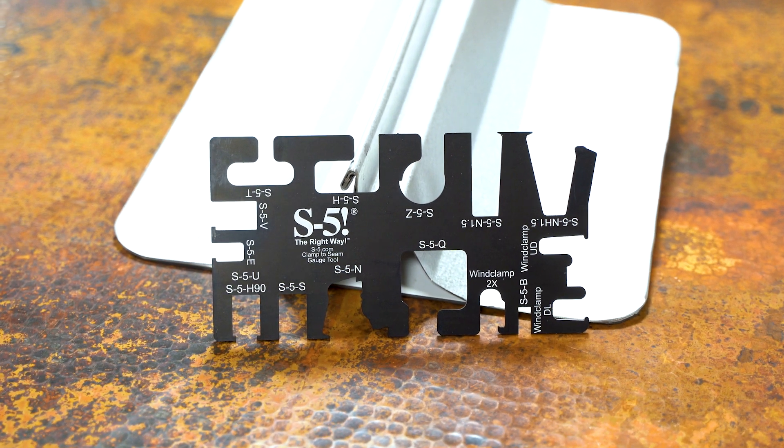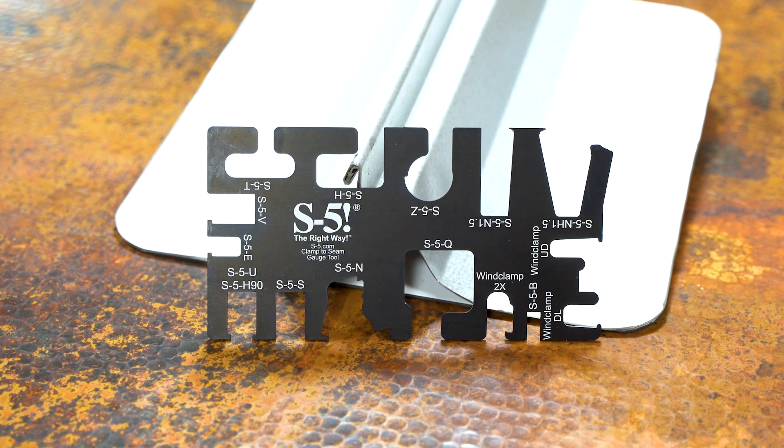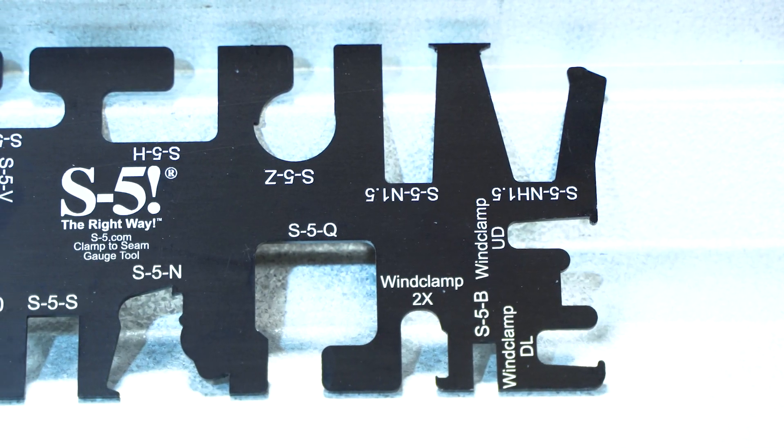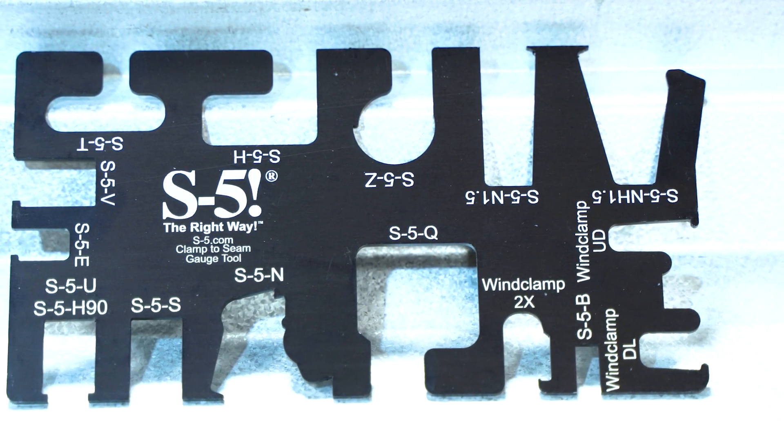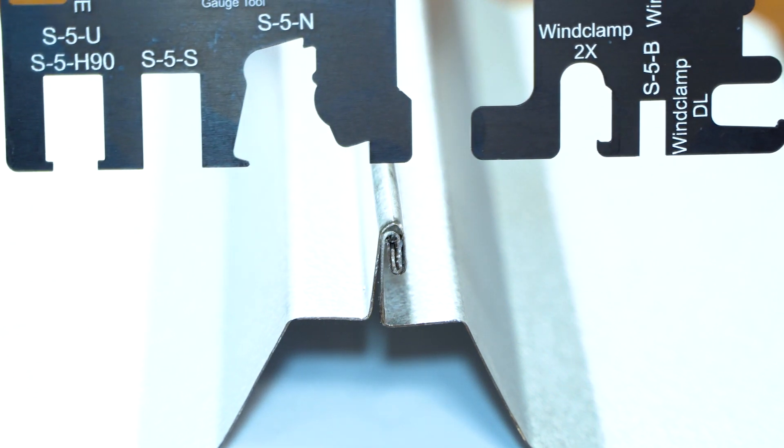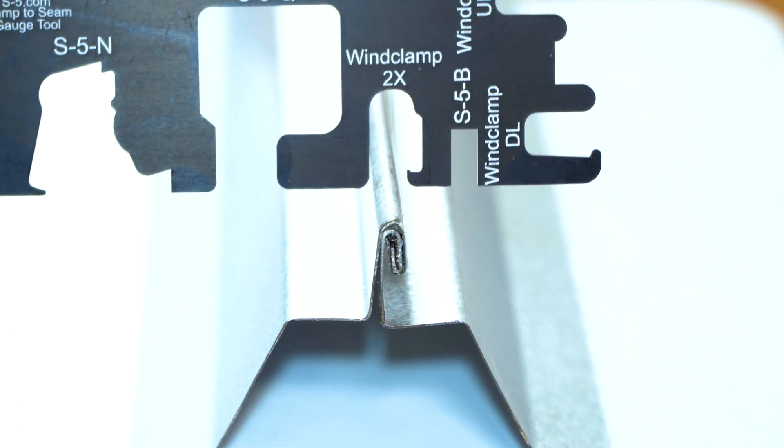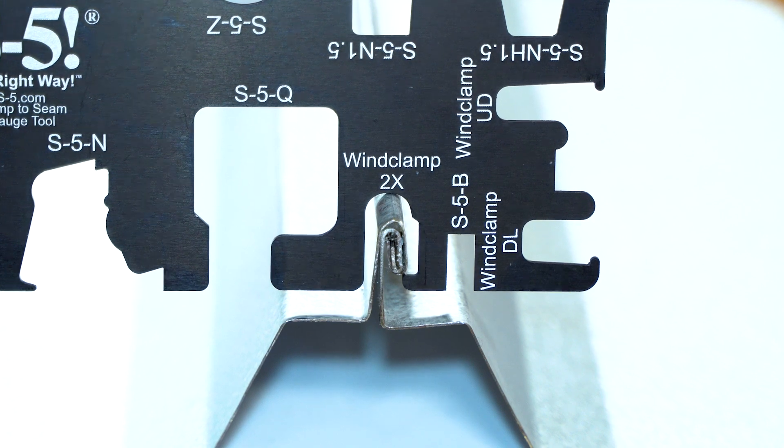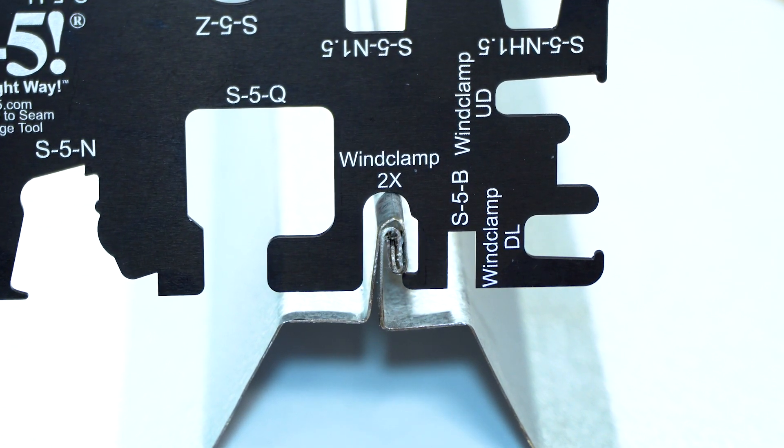The second way to determine the right clamp for your standing seam roof is to order our clamp fitment tool, which features templates for the most popular profile styles. Once you've received your tool, just find the correct shape that most closely resembles your roof and simply slip it over the rib to determine if it's the correct fit for that particular S5 clamp.